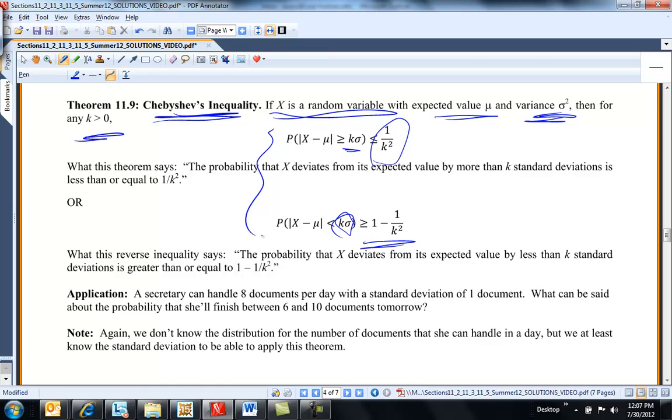The probability that X is within K standard deviations of the mean is greater than or equal to 1 minus 1 over K squared. Again, just two statements about, if you know the standard deviation, putting an estimate on the probability within so many standard deviations of the mean.